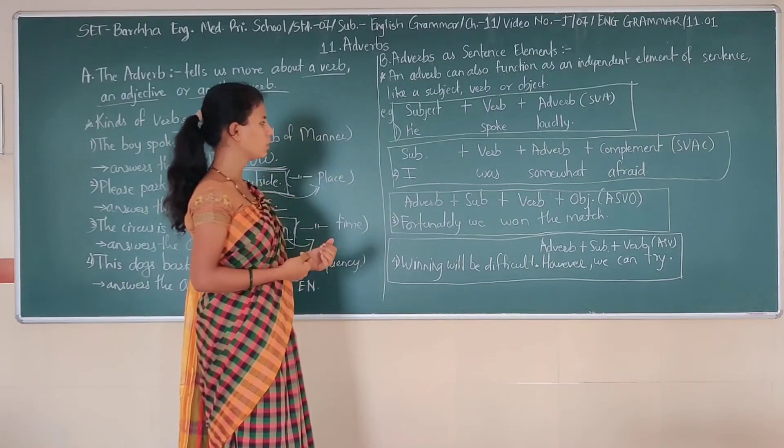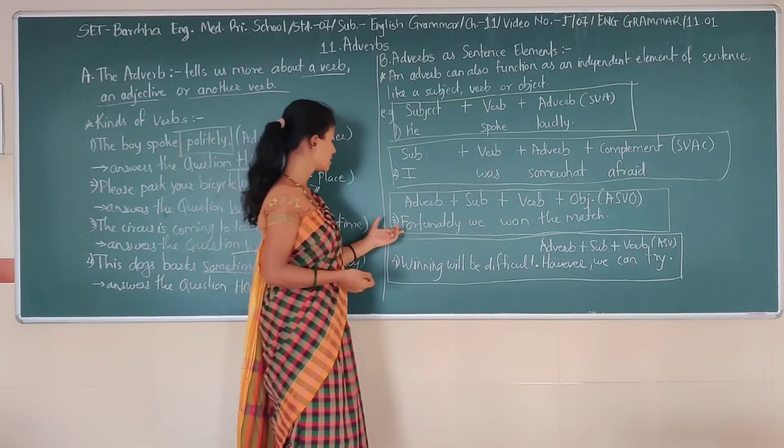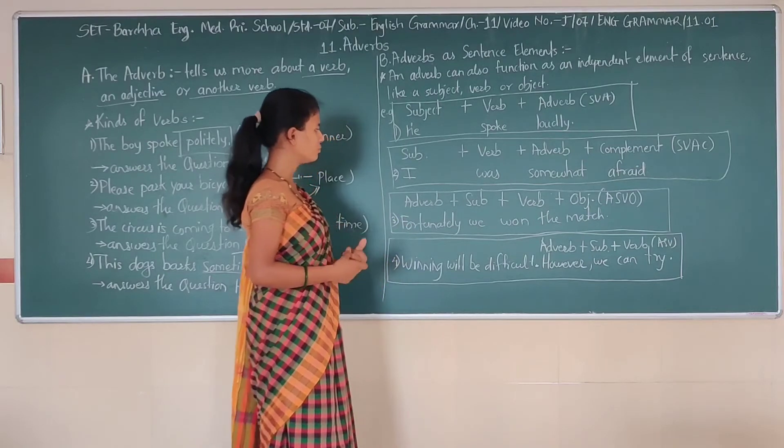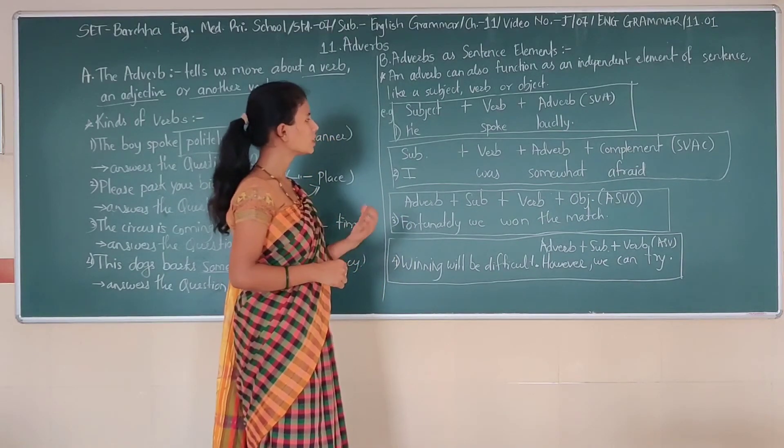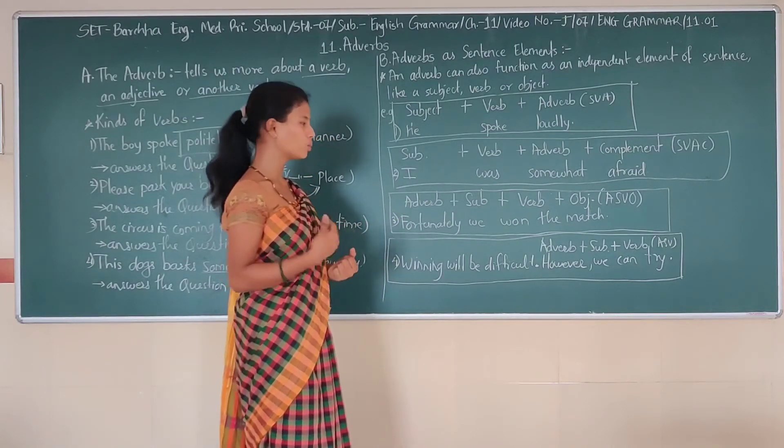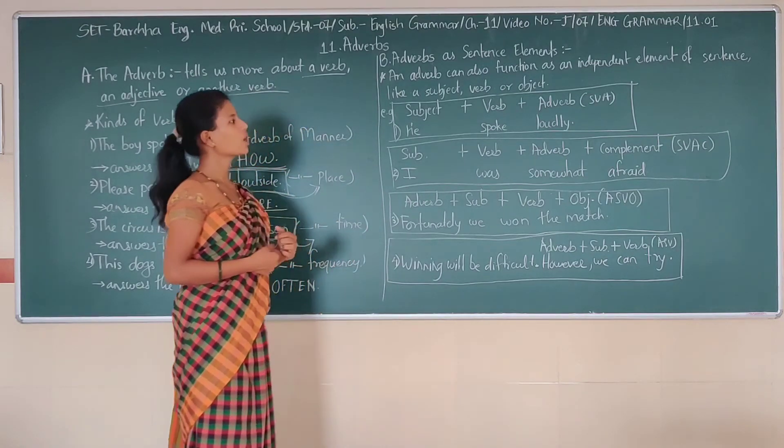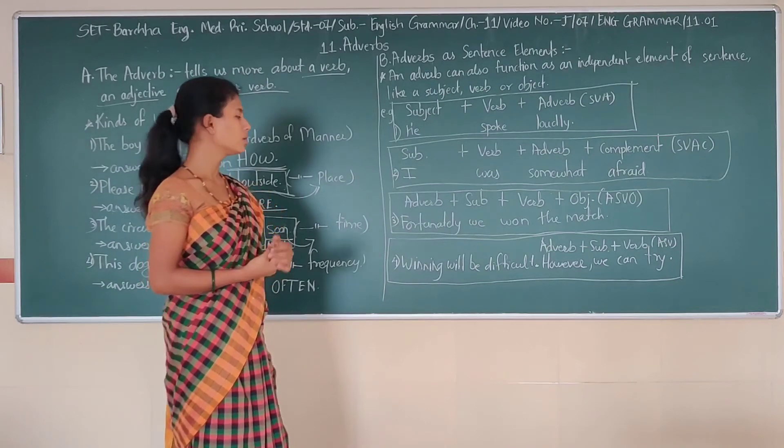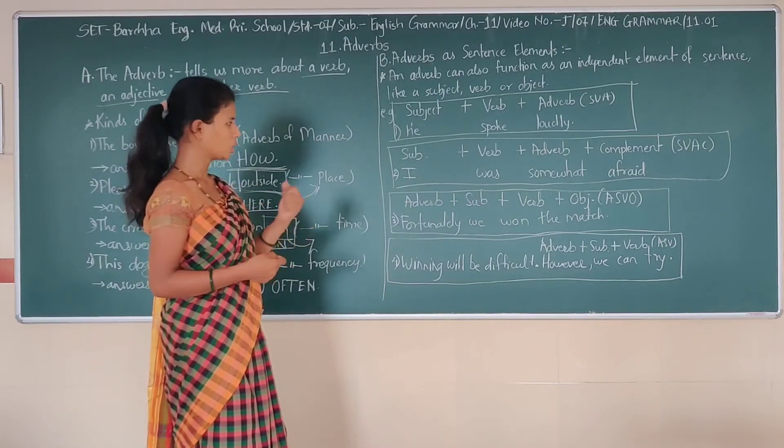Third one. Fortunately, we won the match. In this sentence, fortunately is adverb, subject is we, won is verb and the match is object. And ASVO is the format or formula of the sentence.